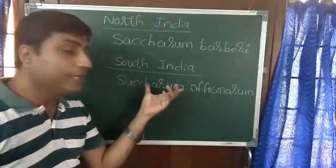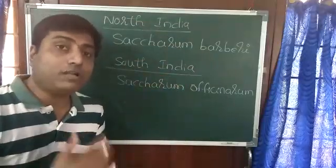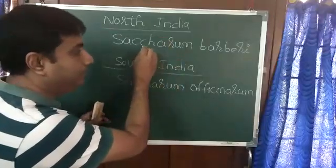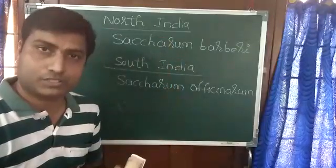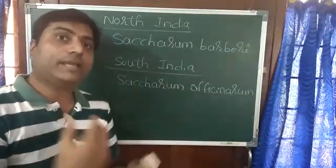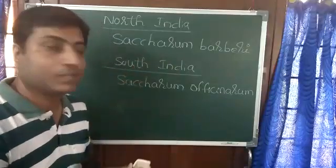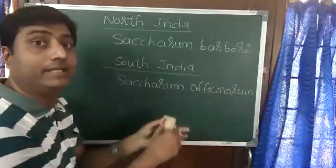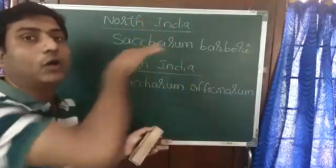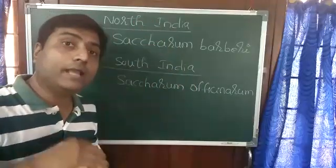Under the crop breeding program, scientists crossed these two species — Saccharum barberi and Saccharum officinarum. The new hybrid gained the capacity to grow in North India with high sugar content and thick stems. Both qualities were incorporated into the hybrid variety, and that hybrid variety could easily be grown in North India.